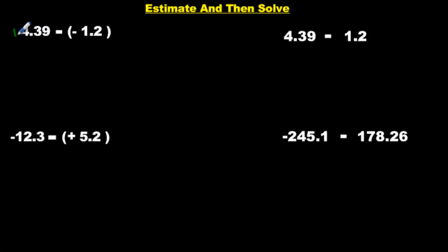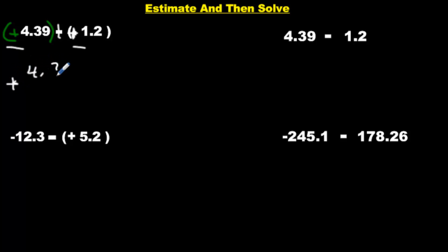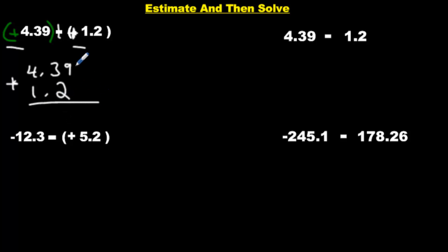Positive 4.39, put it in brackets. Minus negative 1.2 — what do you do if they're both minus? You turn them both into plus: plus and plus. Now we have positive and positive — they're the same sign, so we add these two numbers. We have 4.39 added to 1.2. Line up the decimals properly and we get 5.59. Since they're both positives it doesn't really affect anything.